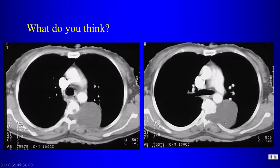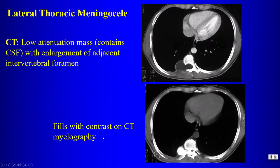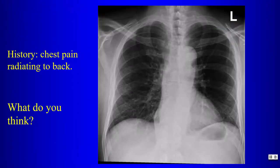A fluid-attenuation mass extending through the neuroforamina in a patient with skin lesions (neurofibromatosis): this is a lateral thoracic meningocele — anomalous herniation of the spinal meninges. Often associated with neurofibromatosis and scoliosis, occurring at the apex of the curve. The lesion is fluid attenuation because it communicates with CSF; myelography will show contrast filling the lesion.